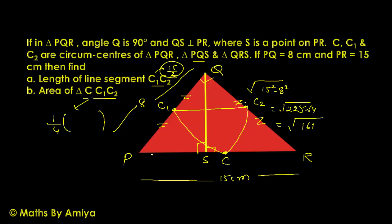We know the area of triangle PQR is half into perpendicular into base. So the area of triangle PQR is half into 8 into root 161, that is root 161 into 4. This is the area of triangle PQR.